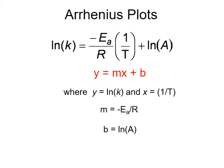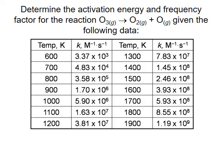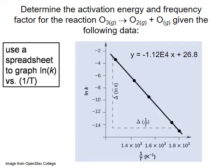Let's look at this in action. We want to determine the activation energy and frequency factor for the decomposition of ozone gas into molecular oxygen and the oxygen radical. To do this, we have experimentally derived rate constants measured in the laboratory at a variety of temperature conditions. We take this data and calculate the natural log of each rate constant and the inverse of each temperature.